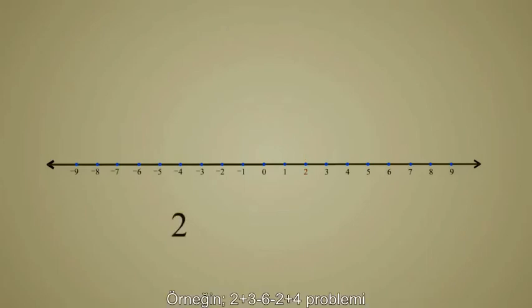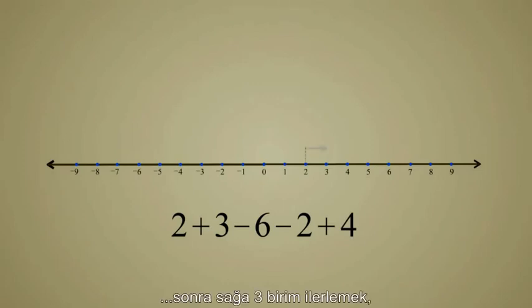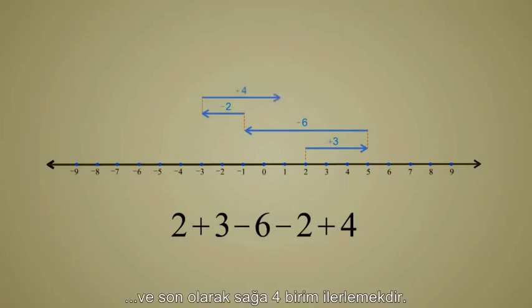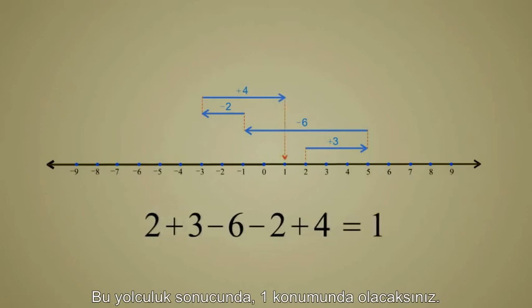For example, the problem 2 plus 3 minus 6 minus 2 plus 4 are instructions to start at 2 on the number line, then move to the right 3 units, then move to the left 6 units, then left another 2 units, and finally to the right 4 units. At the end of the journey, you will be at the 1 position.